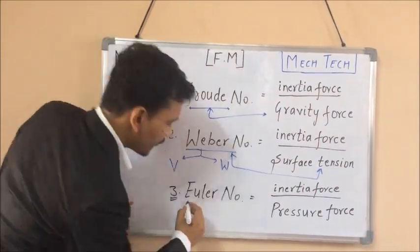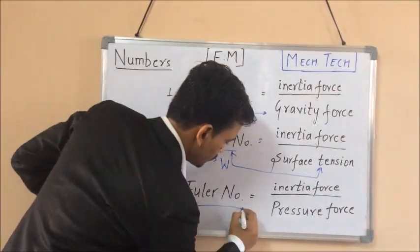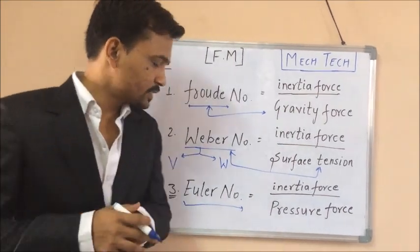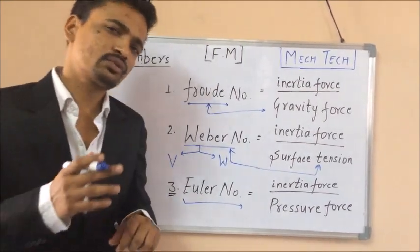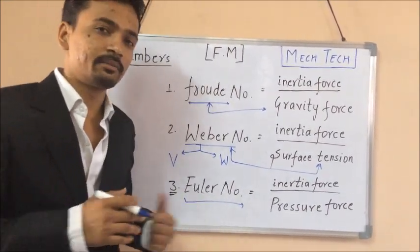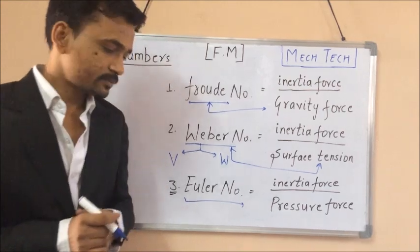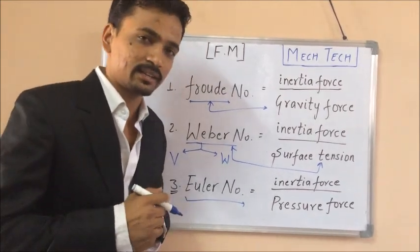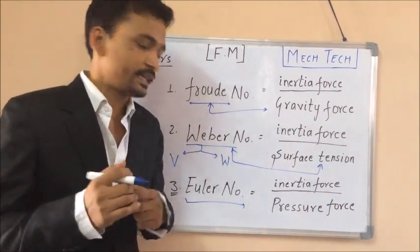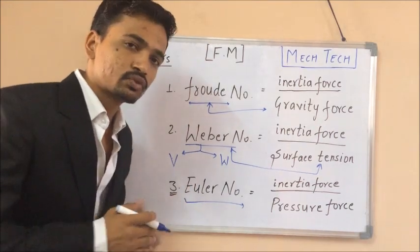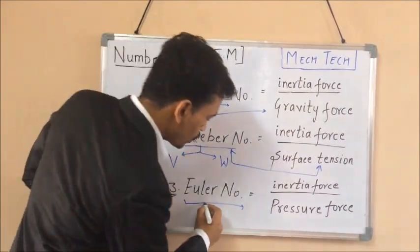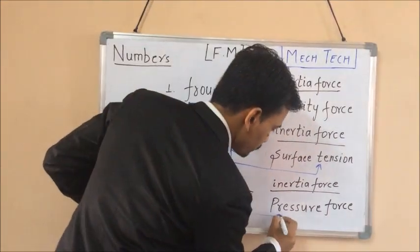Let's go to the next one — the EULER NUMBER. There are so many formulas given by Euler. From the very beginning, there was a lot of pressure on Euler to develop those formulas. That's why he was always under PRESSURE. So the Euler number is related to PRESSURE FORCE.